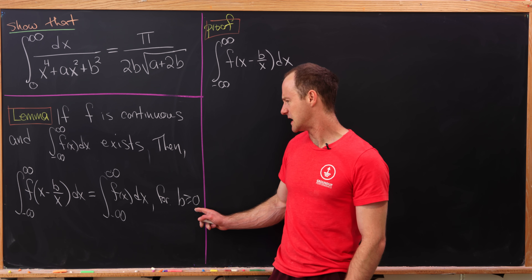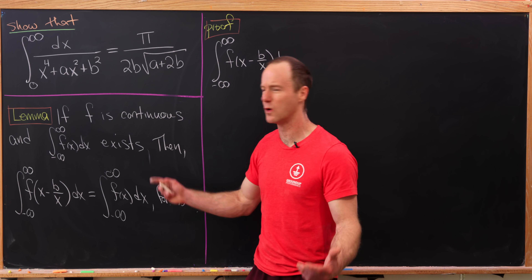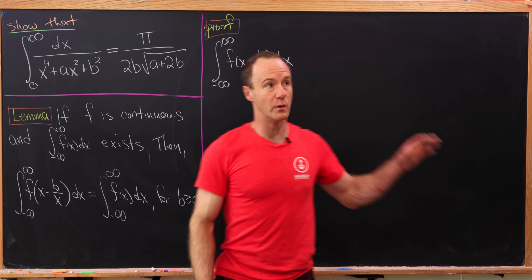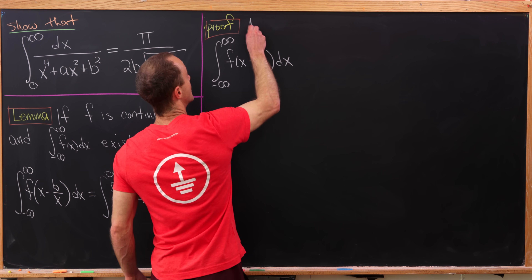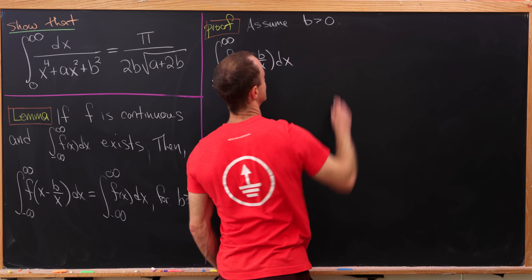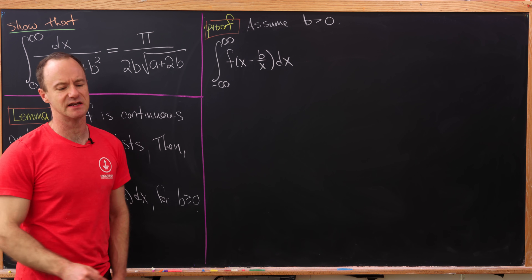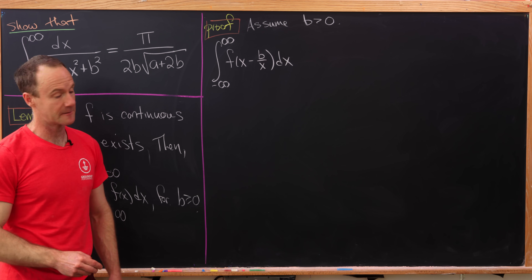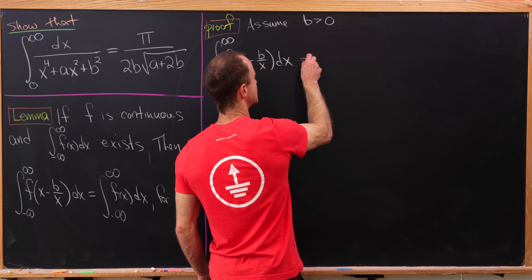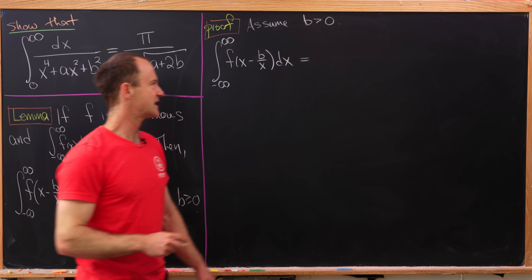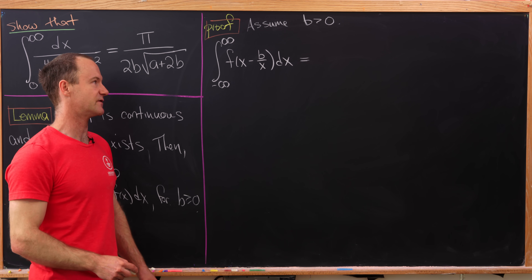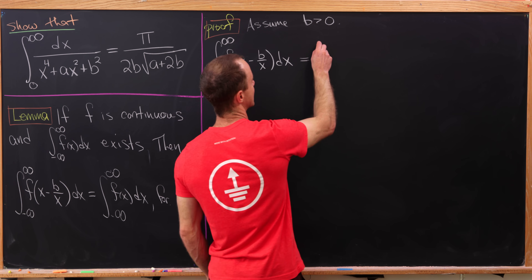I'd like to point out that b equals zero just gives us the whole integral as is. So when we're working through our proof, we may as well assume that b is strictly bigger than zero, because the b equals zero case is really nothing. Our first step will be to break this into two pieces, because something slightly different is happening for the negative values of x versus the positive values of x.